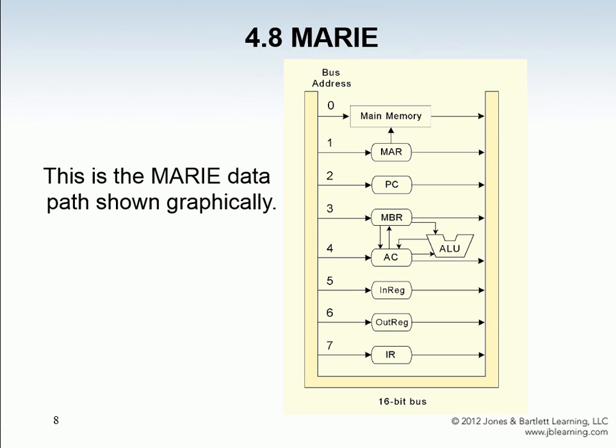This is what the bus diagram looks like — not necessarily physically, but logically. We have main memory connecting to the bus line, and the sequence goes in a clockwise direction with arrows always going toward the right. We have the memory address register, which can connect directly to main memory or go on the bus line; the program counter; the memory buffer register with fast connections to the accumulator for processing; the arithmetic logic unit; and then the in register, out register, and instruction register.